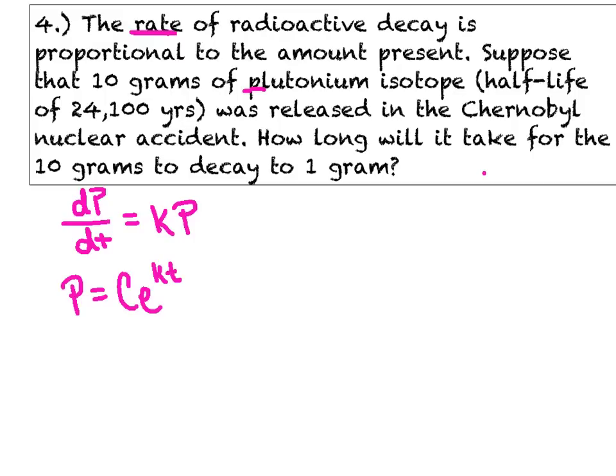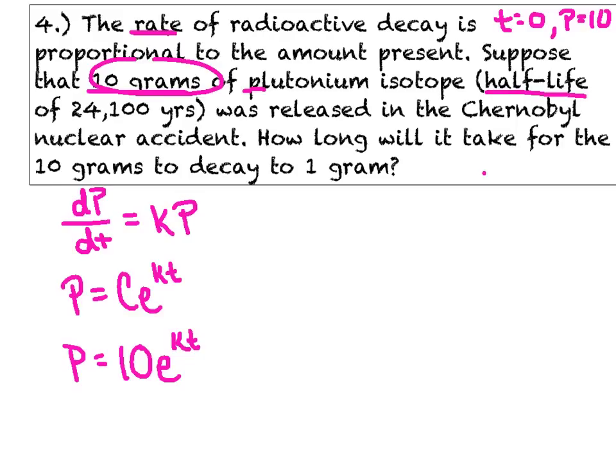In that second sentence, it says suppose that 10 grams of plutonium isotope with a half-life of 24,100 years was released in the Chernobyl nuclear accident. How long will it take for the 10 grams to decay to just 1 gram? They're saying when T equals 0, P equals 10. That's my initial amount, and that 10 is going to be my C value. Most of the time, they do give you that initial amount where you can just instantly plug a number in for C. The next thing we notice is this half-life thing. It means half of the 10 grams will be there 24,100 years from now. When T equals 24,100, then P will equal 5. That's what I'm going to substitute in right now.